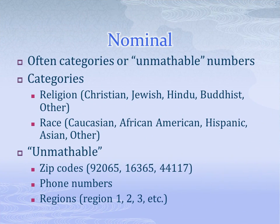Nominal variables are often categories, such as religion. These categories have no real intrinsic comparison. For example, if we were to represent each religion with a number, we would not say that those with higher numbers are more religious — that just doesn't make any sense. Same with race: a Hispanic individual has no more or less race than an Asian. Thus, we can't make meaningful intrinsic comparisons between these categories.